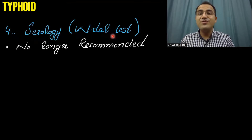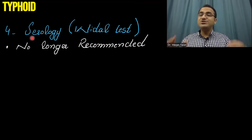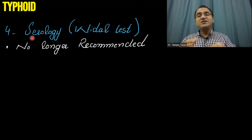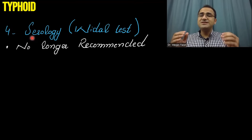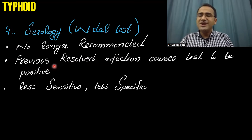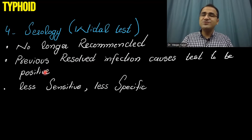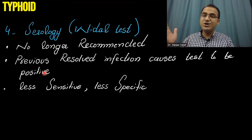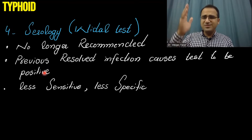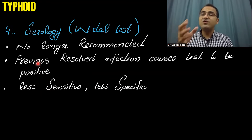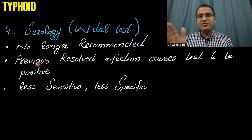Coming to serology — the Widal test — in which you detect antibodies against the bacteria, this is no longer recommended. Any previous resolved infection can cause the test to be positive. So if a patient has a history of typhoid fever, the test will always be positive. It is less sensitive, less specific, and is no longer recommended for the diagnosis of typhoid.